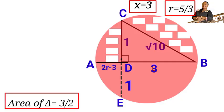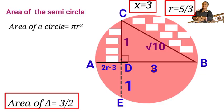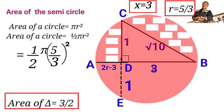We have to find the area of the semicircle. So the area of a circle is pi r squared. Area of a semicircle will be half pi r squared. So let us substitute the radius we got into the area of the semicircle.